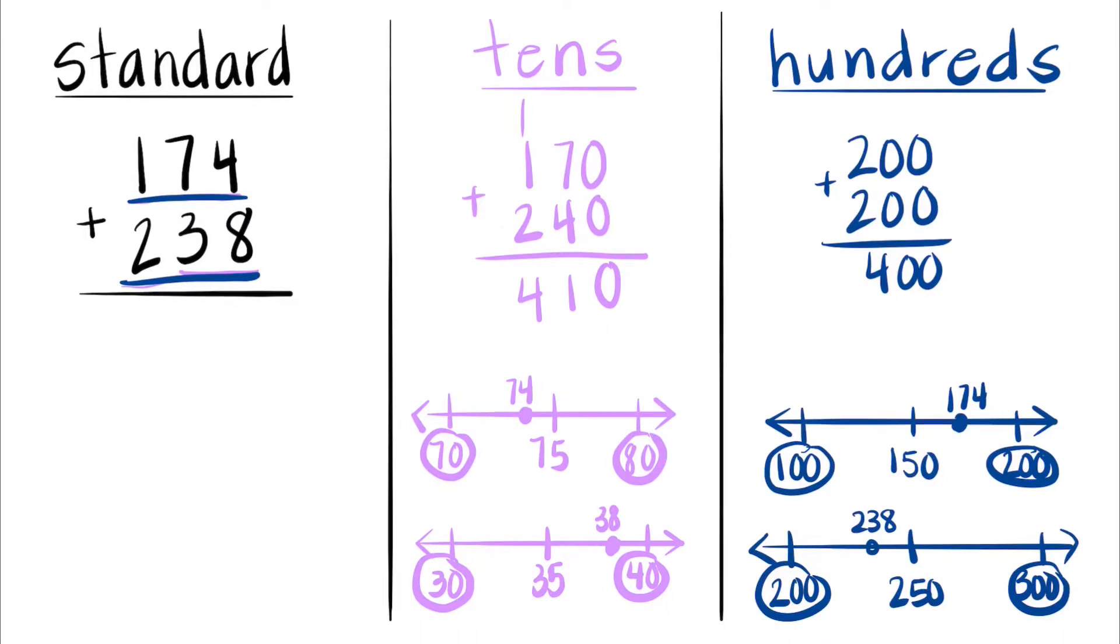Now let's check if our rounding was reasonable by adding the standard way. 8 plus 4 is 12. 7 plus 1 plus 3 is 11. And 2 plus 2 is 4. 412.